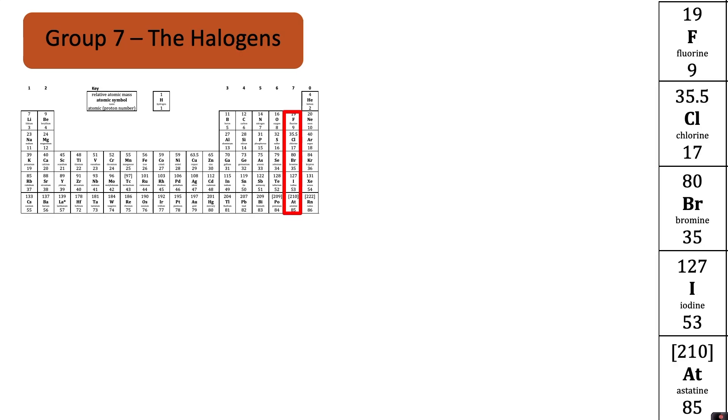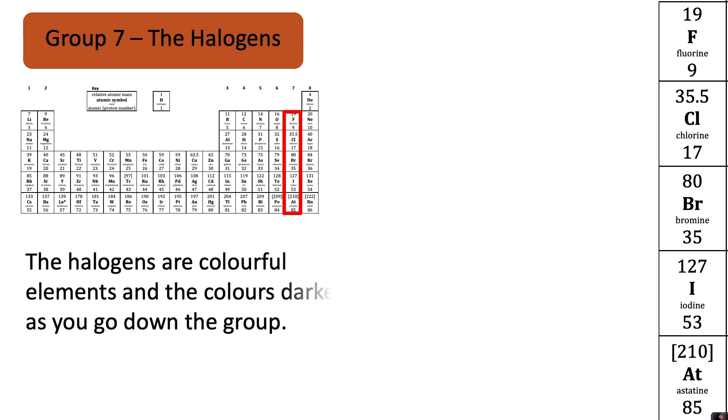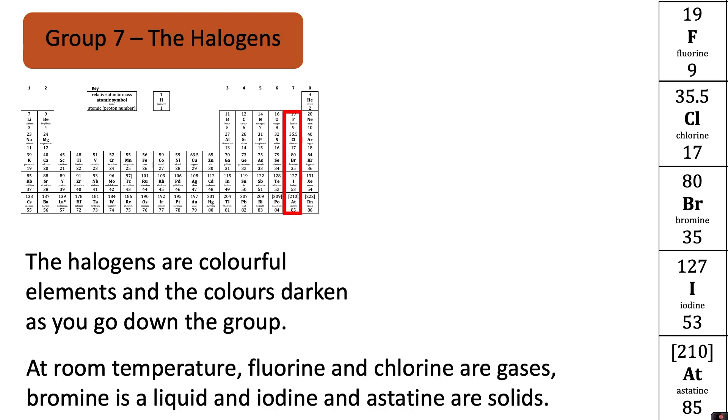Group seven are called the halogens. The halogens are colourful elements and the colours darken as you go down the group. At room temperature fluorine and chlorine are gases, bromine is a liquid and iodine and astatine are solids.